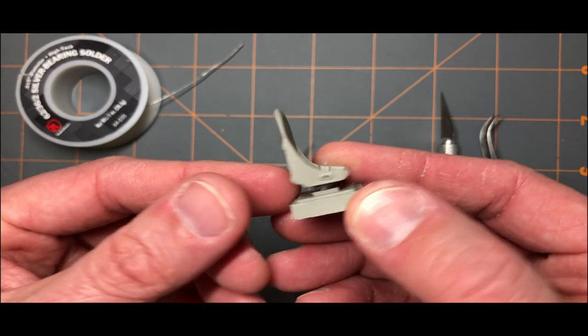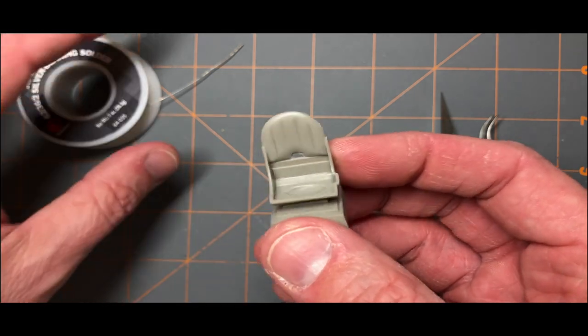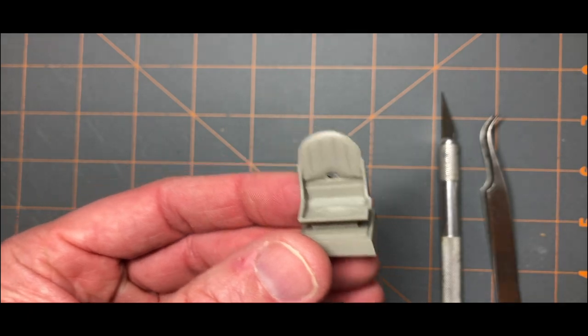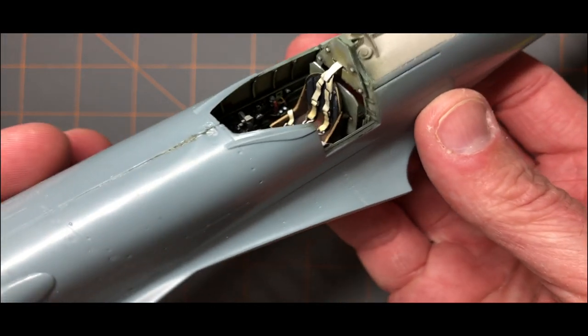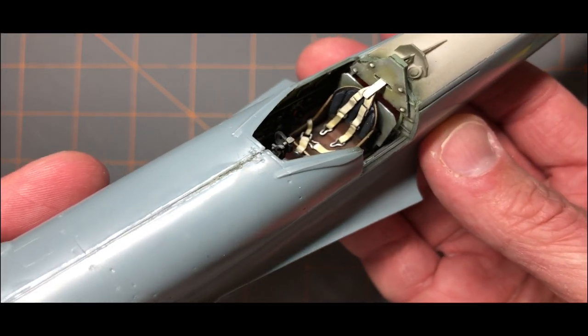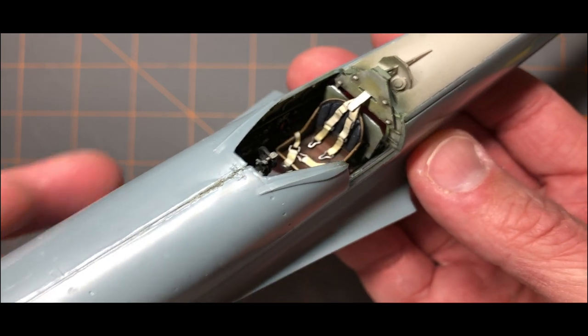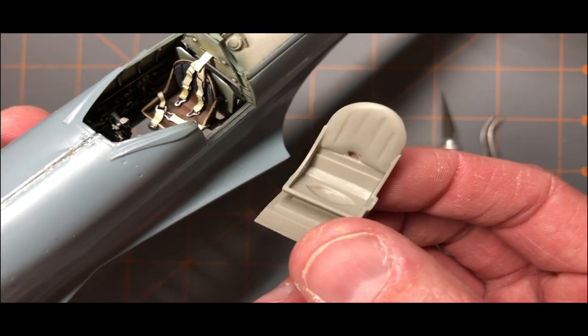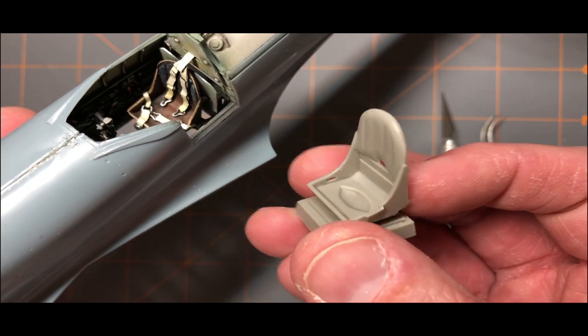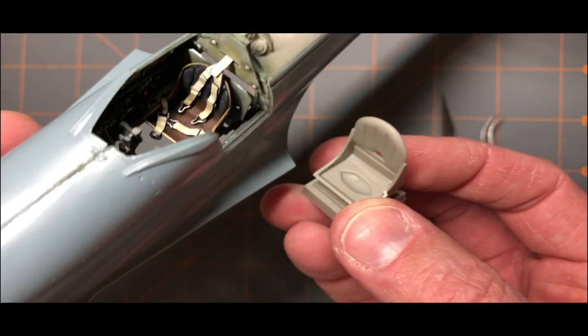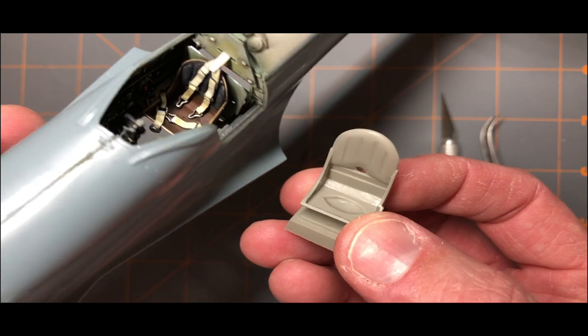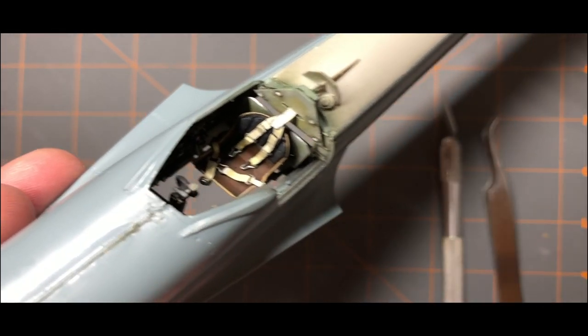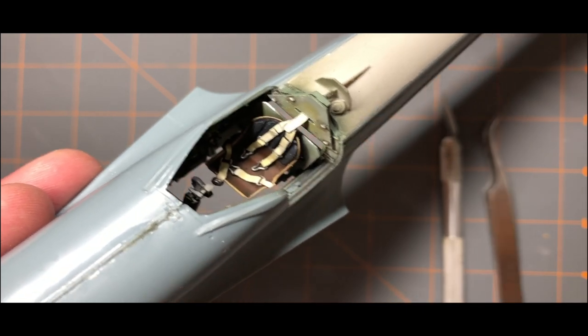The seat I'll use is this 1/32nd Spitfire resin seat that came out of a PCM Spitfire. And just for comparison, here is the seat with the belts that I had used. I actually replaced the seat because as you can see this one that came with the kit is gargantuan and grossly out of scale big. So I replaced it with a Barracuda resin seat and then formed my own seat belt here. So let me show you how it's done.